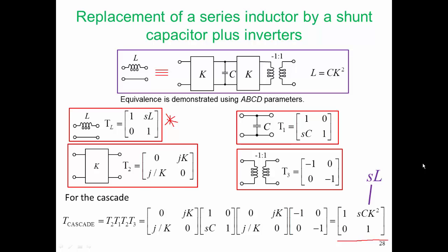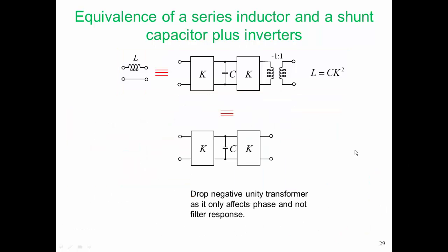Now in the prototype we're dealing with now, k is just equal to one, but just imagine if k was 50 ohms. So if k was 50 ohms, k squared is 2500. So we could take a very small value of capacitance and realize a large value of inductor. So that's another advantage to using an inverter. What we've shown here is the series inductor is equivalent to this structure with two inverters, a capacitor, and an inverting transformer.